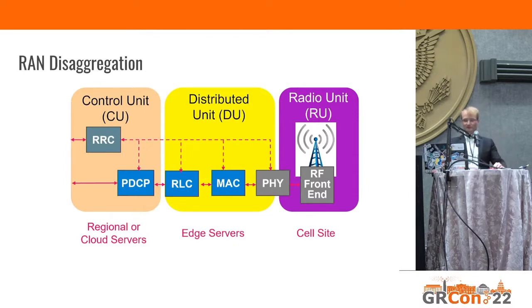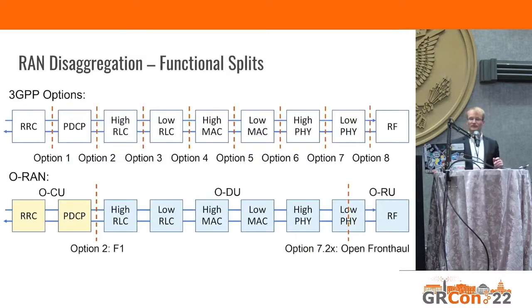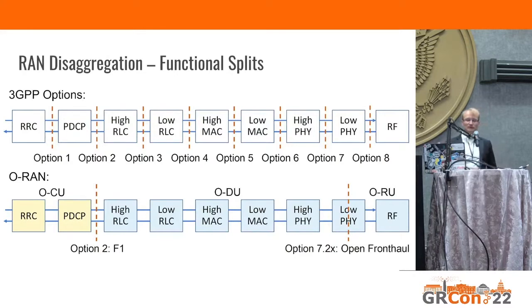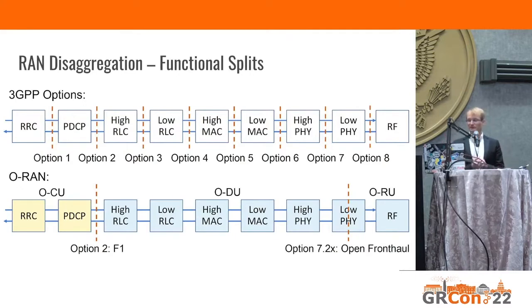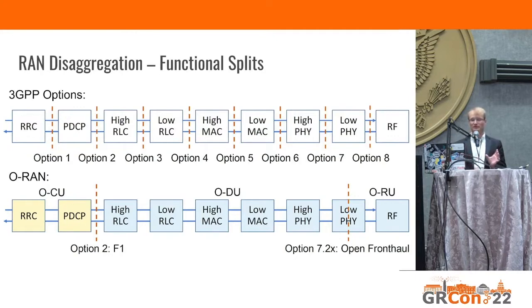The control unit can be at regional servers or even in the cloud. The third generation partnership project, which standardizes all cellular network generations, offers eight options to split the base station, and vendors can decide what they want to use. ORAN — open RAN — is standardized by the Open ORAN Alliance. They specifically use the 7.2x split, which they call open front haul, with a little physical layer processing at the RF part and the rest in a distributed unit. They use option 2 for the F1 interface between the distributed unit and the control unit.